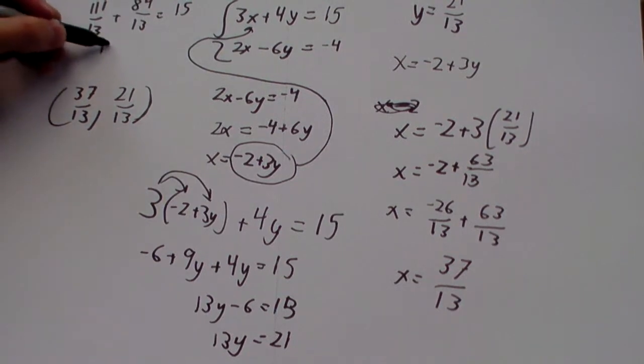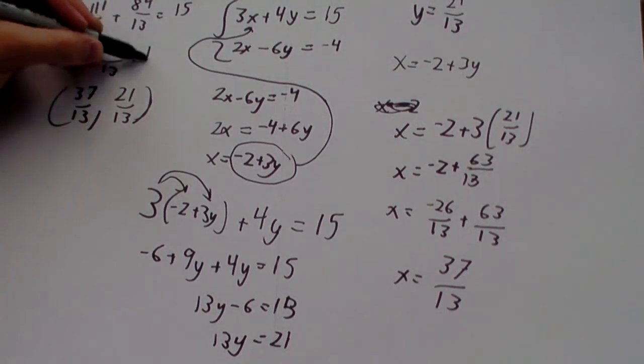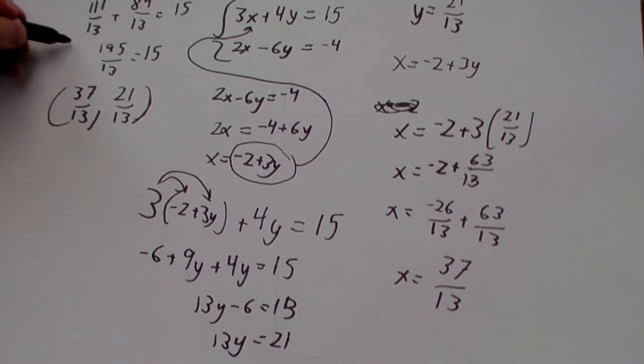Now, 111 plus 84 is going to be 195 over 13 equals 15. So, that checks out.